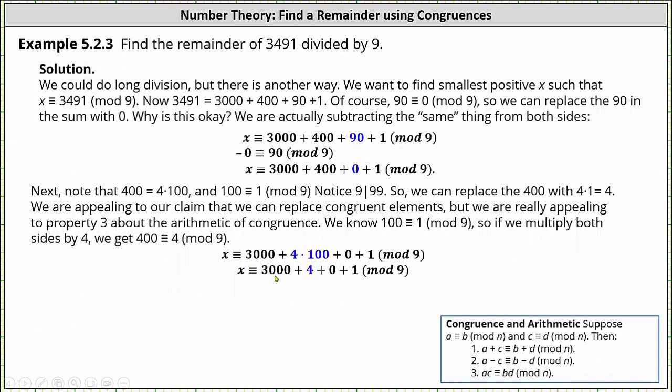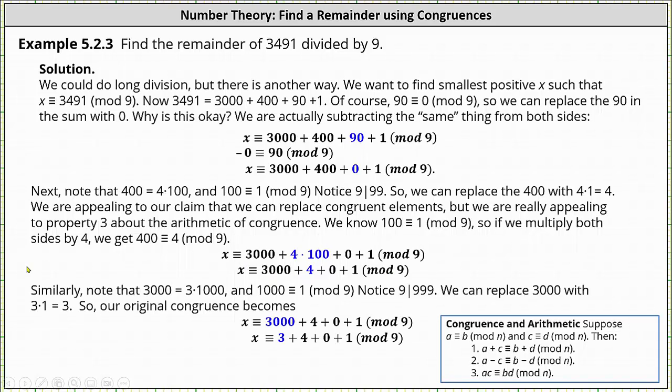The last step is to work with the 3000. Similarly, we can write 3000 as 3 × 1000, and 1000 ≡ 1 (mod 9) because when 1000 is divided by 9, the remainder is 1. Notice 9 divides 999 and 1000 is one more than 999. We can replace 3000 with 3 × 1 or 3, so the congruence becomes x ≡ 3 + 4 + 0 + 1 (mod 9).